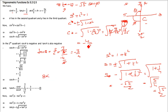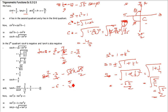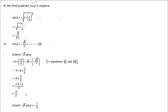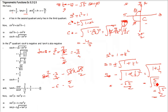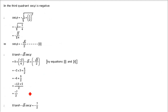Now computing: 8 tan θ - √5 · sec φ = 8 × (-3/4) - √5 × (-√5/2) = -6 + 5/2 = -12/2 + 5/2 = -7/2. The answer is -7/2.